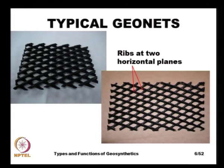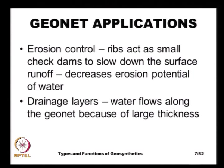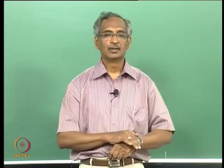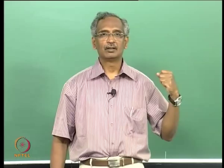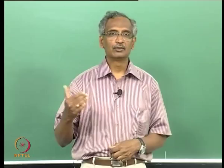Geonet applications are mainly for erosion control, because the thick ribs act as small check dams to slow down surface runoff. Once the rainwater surface runoff is slowed down, it reduces the erosion potential of the water and thereby reduces the surface erosion of the soil.